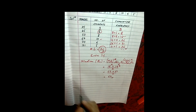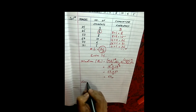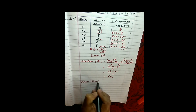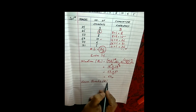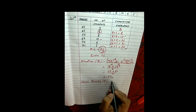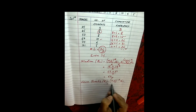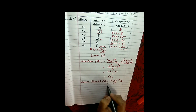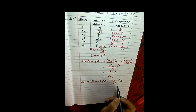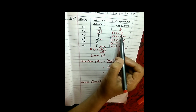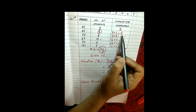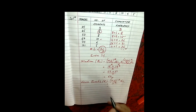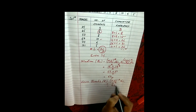Similarly, let us find out the lower quartile. Lower quartile is Q1. To find Q1, we use the formula: the n by 4th observation, that is 36 by 4th observation. So 36 by 4 gives us the 9th observation, or the 9th boy. So where is the 9th boy? If you look at the table again, 8 boys have got 45 or less than 45. So the 9th boy gets 50. So the lower quartile is 50.